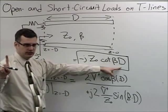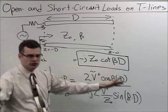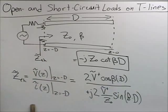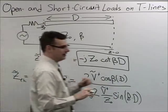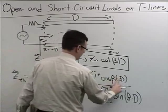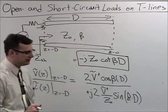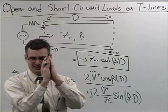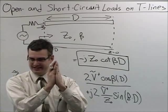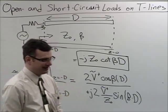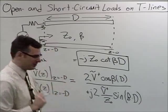Quick sanity check: when D = 0, cotangent of 0 is infinity — so a zero-length line connected to an open circuit is still an open circuit. Good. It's really when you start adding length that interesting things happen. Let's graph the cotangent function — cot(βD) as a function of D — plotting in increments of quarter wavelengths.